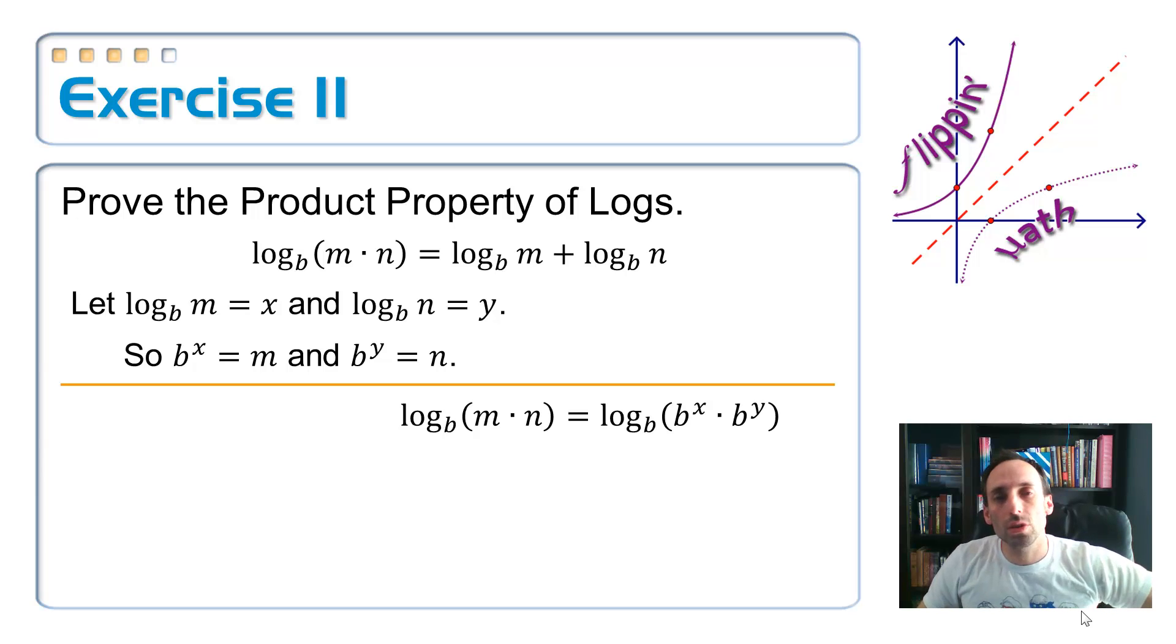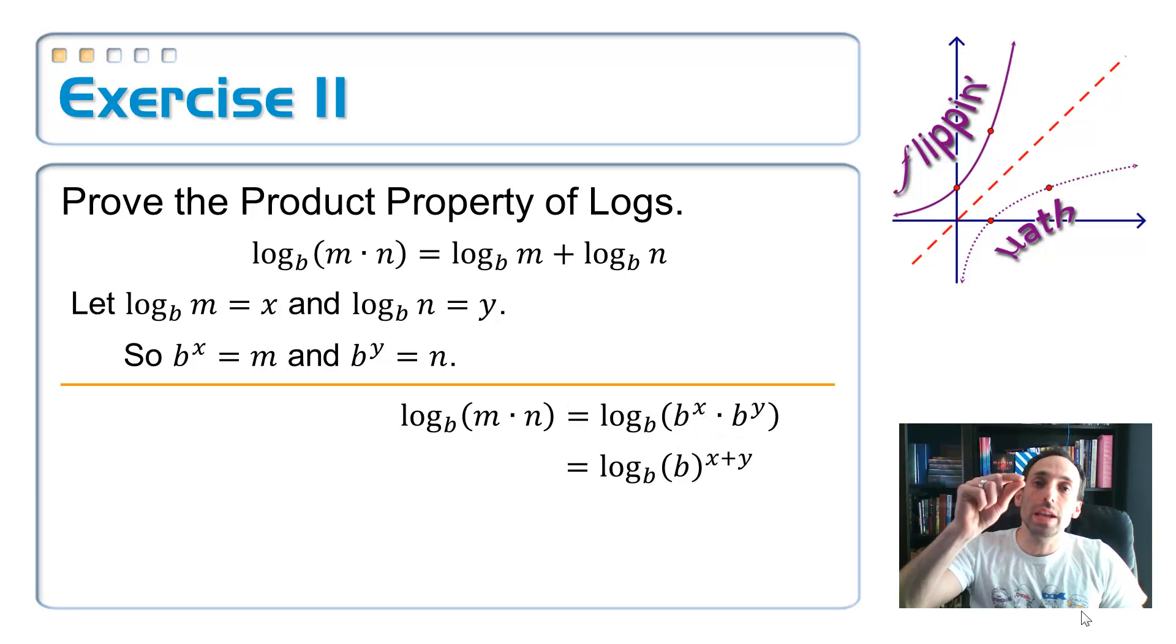Now I'm just working on the right side of this equation. I'm just going to simplify it. I'm going to keep transforming it. It's going to look different, but it's going to be equivalent to the first, the left side of that equation. Okay. So inside the parentheses, B to the X times B to the Y, since they have the same base, you get to add the exponents. So this becomes the log base B of B to the X plus Y. Now what I'm going to do is just use the inverse property, the log base B of B to the anything. It's an exponent. So those things cancel each other out and I just get X plus Y back.